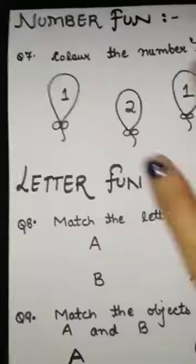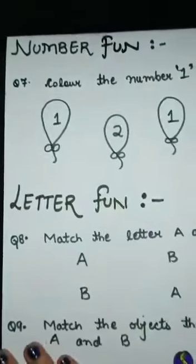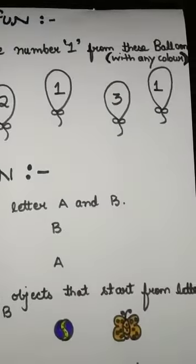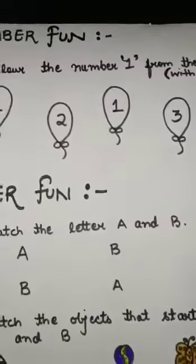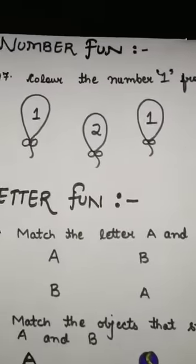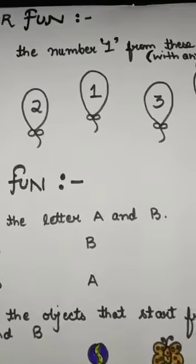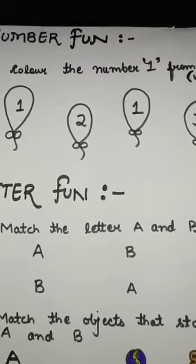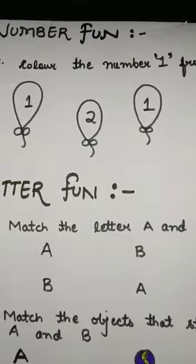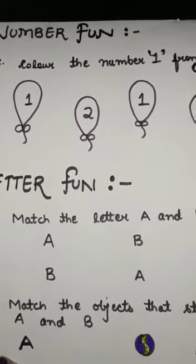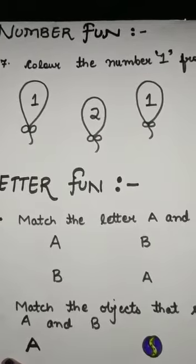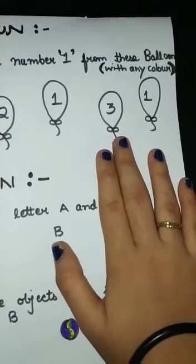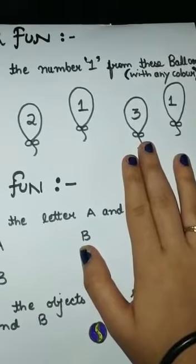Now question seven begins under the number one section. The question is: colour the number one balloon from these balloons with any colour. I have drawn balloons with different numbers — one, two, and three. You have to identify which balloon has the number one and colour only that balloon with any colour.